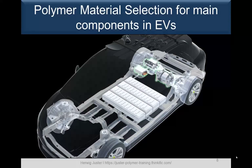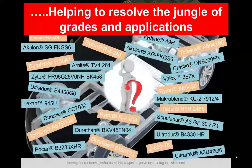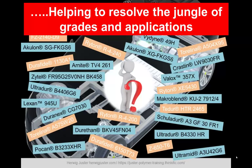When we look at what polymer material selection in electric vehicles means, we focus mainly on three groups: the battery components, the traction motor components, and the power electronics. The major motivation is to help resolve the jungle of grades and applications and get a better understanding of which material classes and grades are suitable for which application.